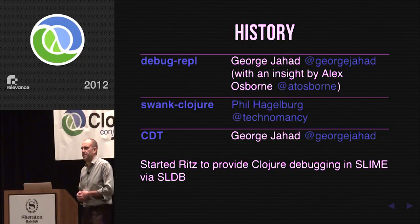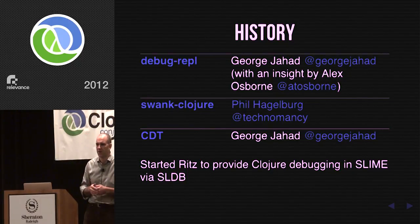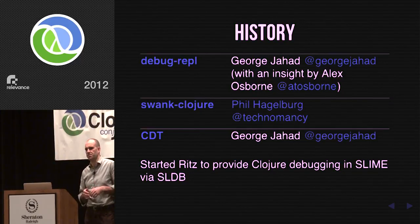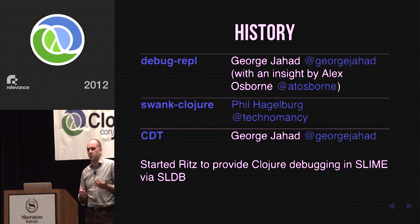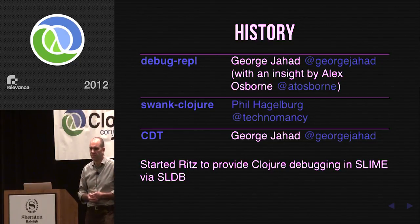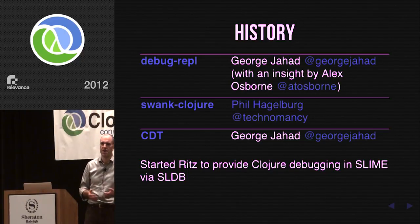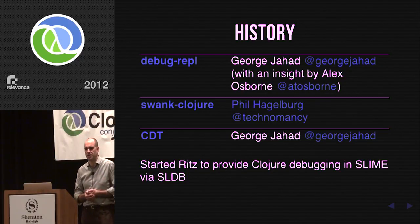Luckily the JVM platform itself provides a debugger. JPDA is the name of the overall environment and JDI — the Java Debug Interface — is the Java interface to that. George and I, in parallel and unknown to each other, started working on hooking up the JVM debug environment to Clojure. George wrote a library called CDT — Clojure Debug Toolkit — and I started work on what would become Ritz, which started life as a fork of swank-clojure.